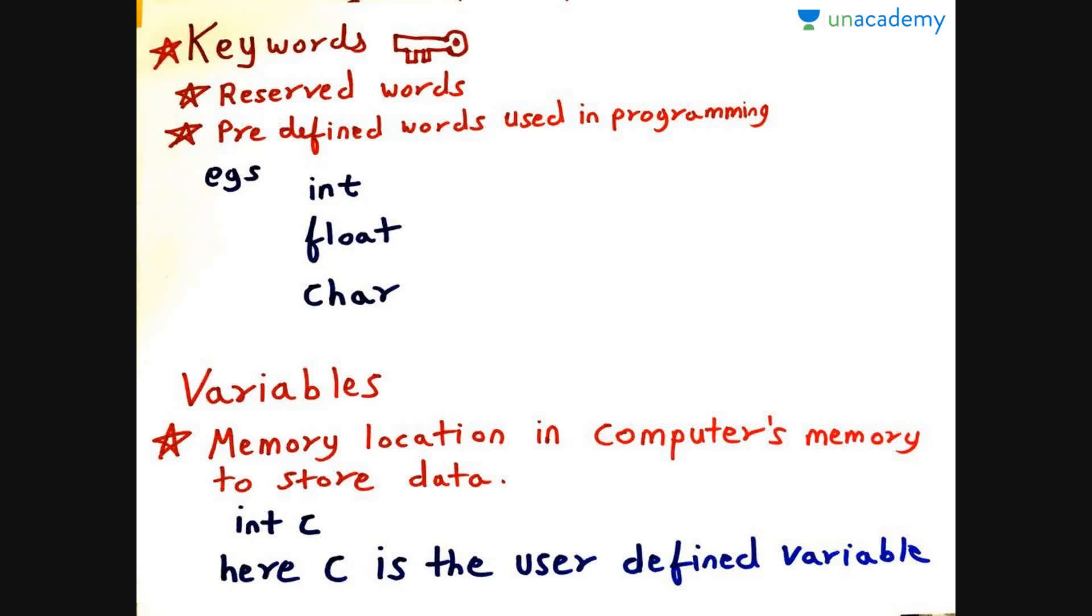Now we are all familiar with the word key, which means important or is a device used to open doors or something. The same way in C programming, there are keywords, meaning important words which are reserved words and they are predefined in the programming language to do certain functions.